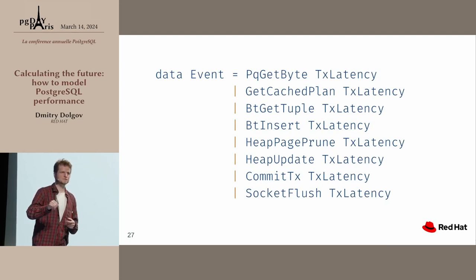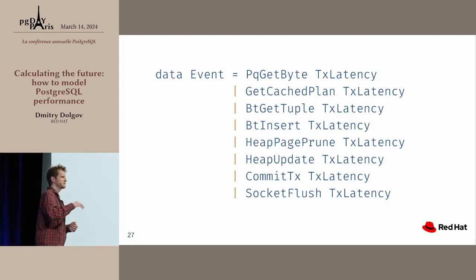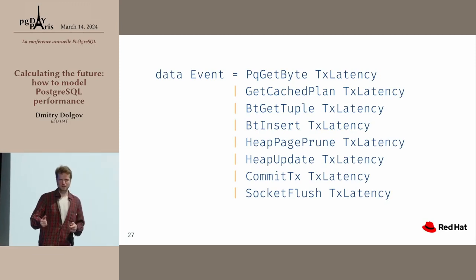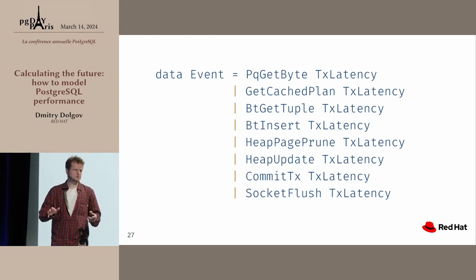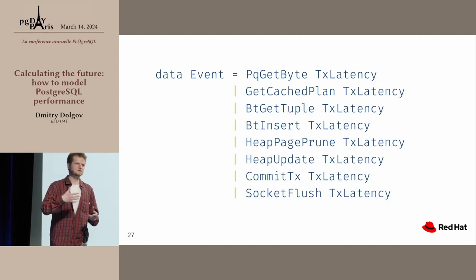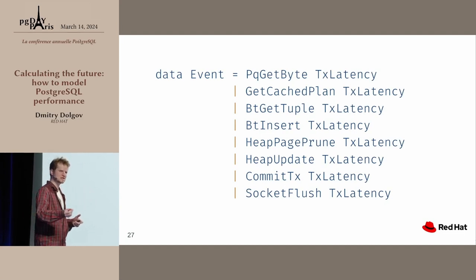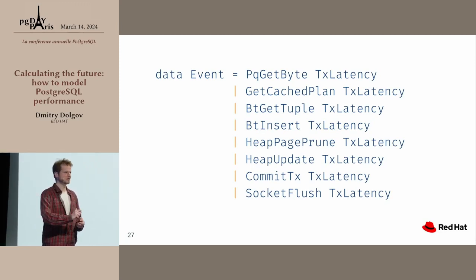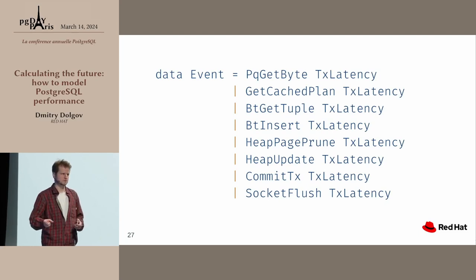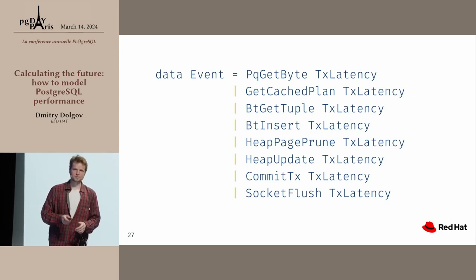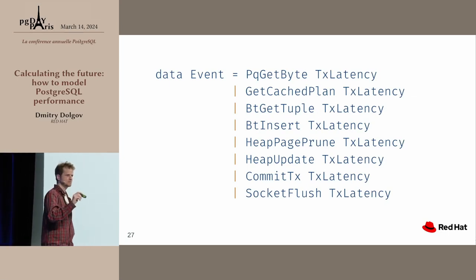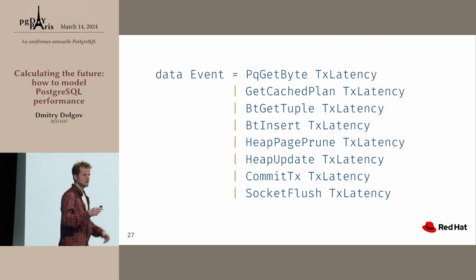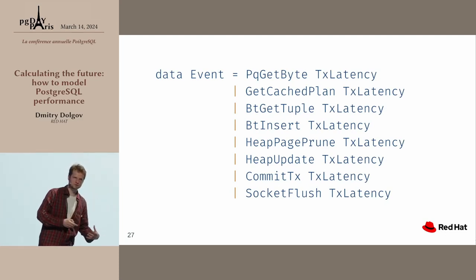Every single one of those stages is described by some random variable — something non-deterministic that still looks like the original value. For example, reading from the network never gives you the same value: you get 10 microseconds, 20 microseconds — it varies. Every single stage has some amount of variability, but the overall pattern looks quite similar to what we see in reality.